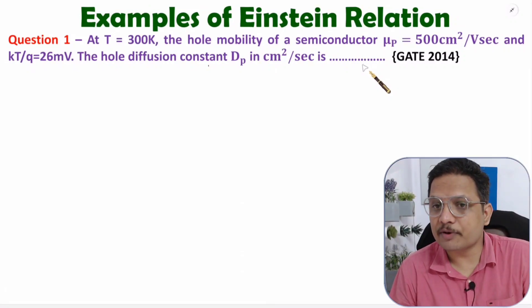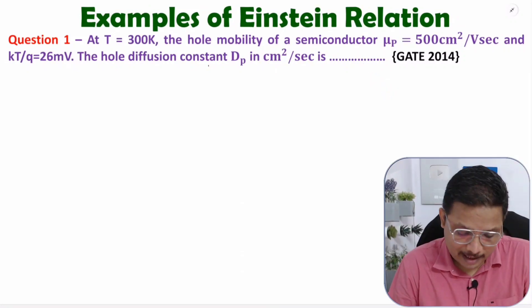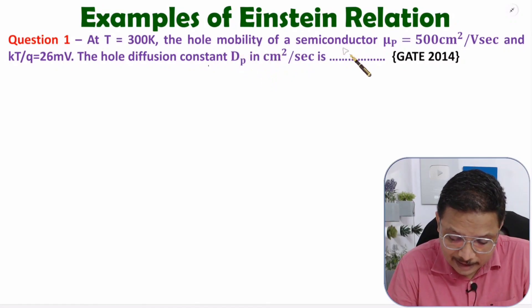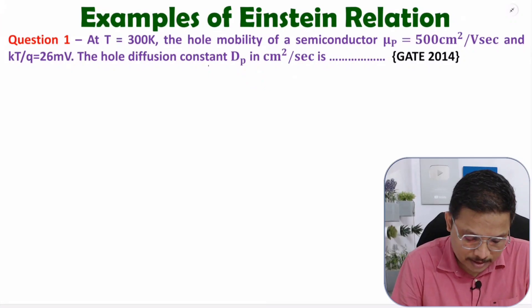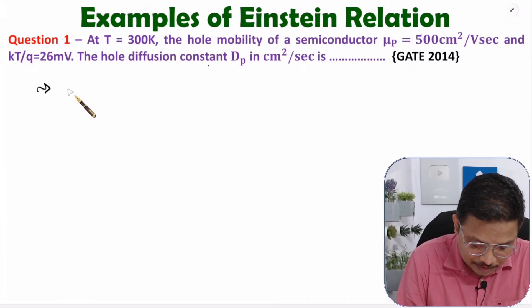So we need to find the diffusion constant. Mobility is given, kT/q is given, and we need to find diffusion constant. As per Einstein relation, you can say Dp equals...